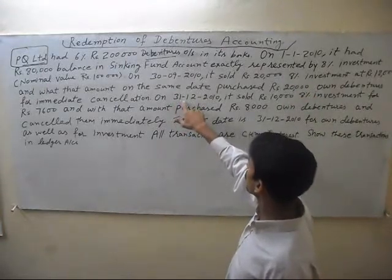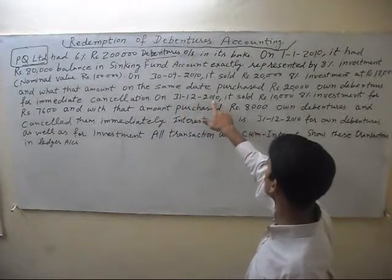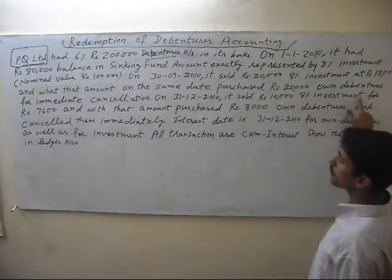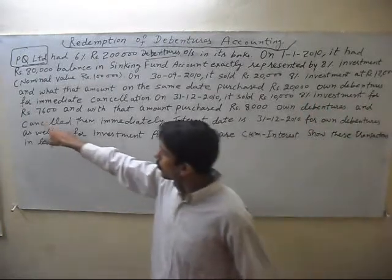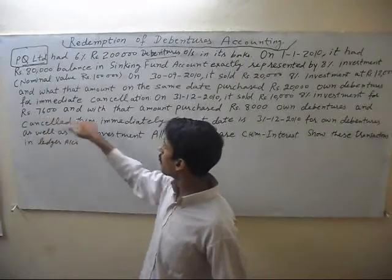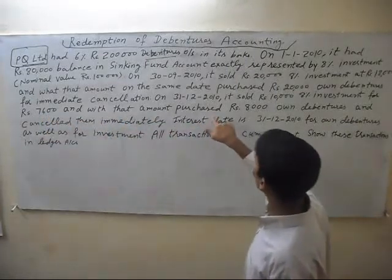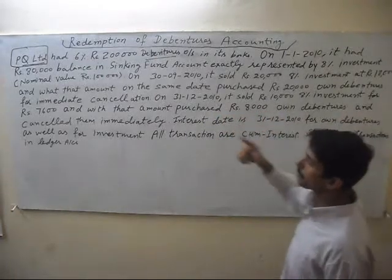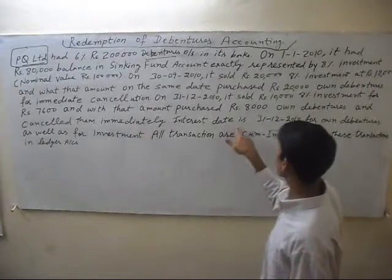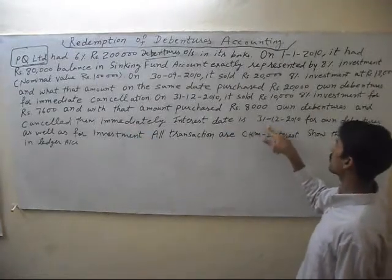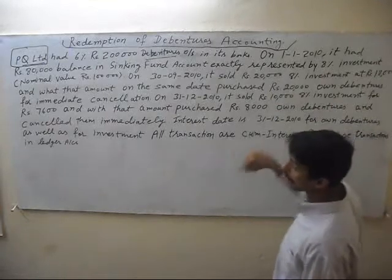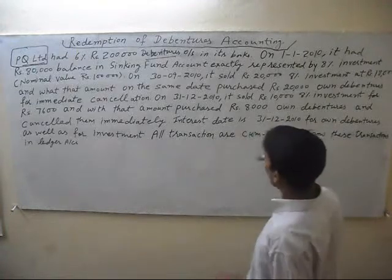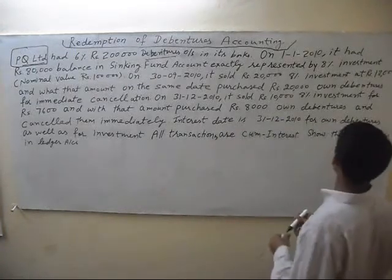On 31st December 2010, it sold 10,000 of 8% investment for rupees 7,600 and with that amount purchased 8,000 of debentures and canceled them immediately. The interest date is 31st December 2010 for both debentures as well as for investment. All transactions are recorded in trust.